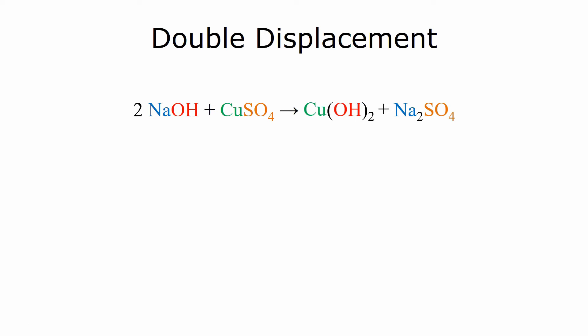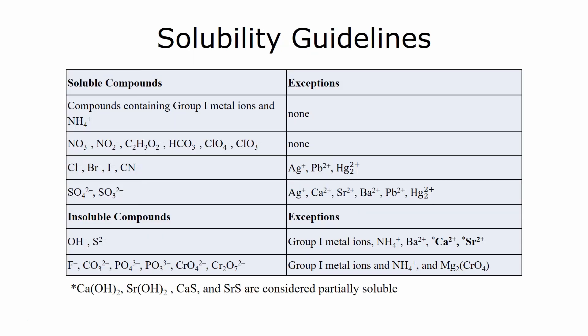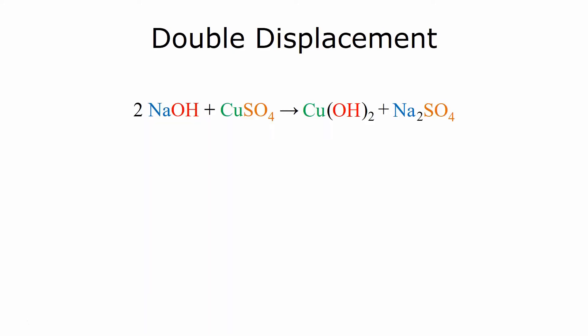The next step in this reaction is to determine which compounds are soluble in water and which ones are insoluble. For this, we'll have to use a solubility guideline. Using this table, we can determine that sodium hydroxide is soluble. So we write AQ for aqueous state of matter in parentheses after the sodium hydroxide.